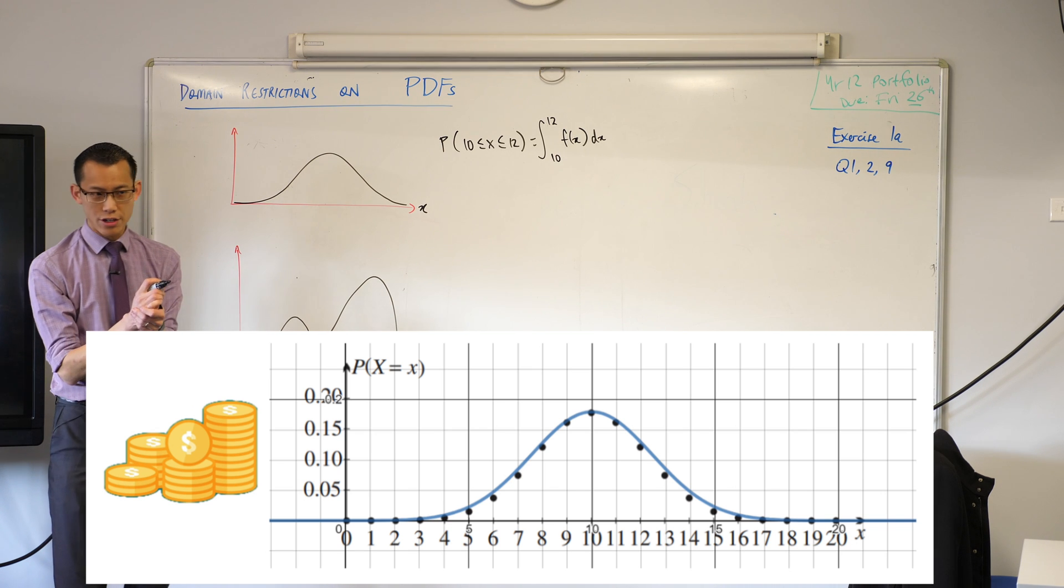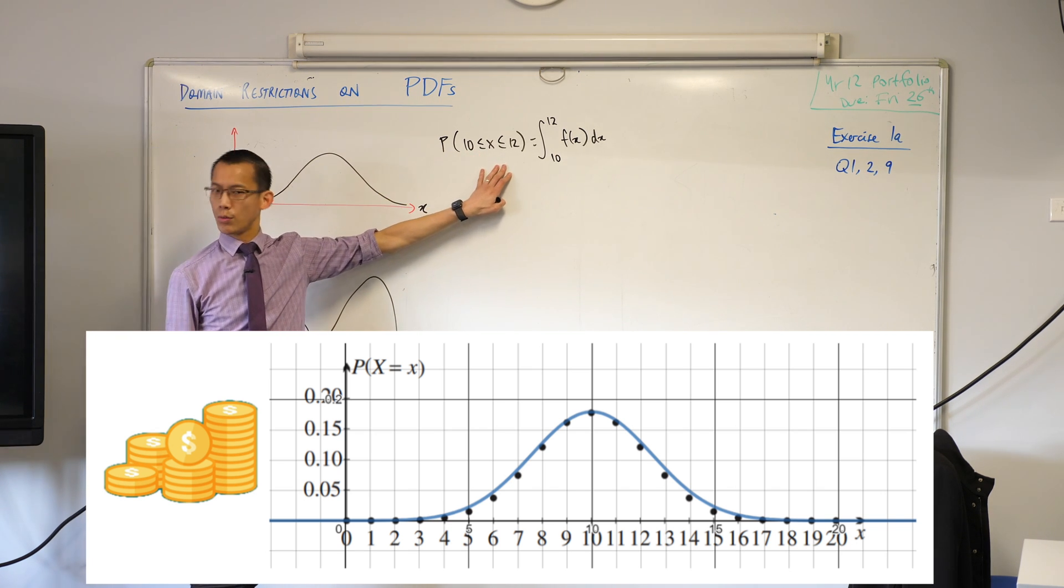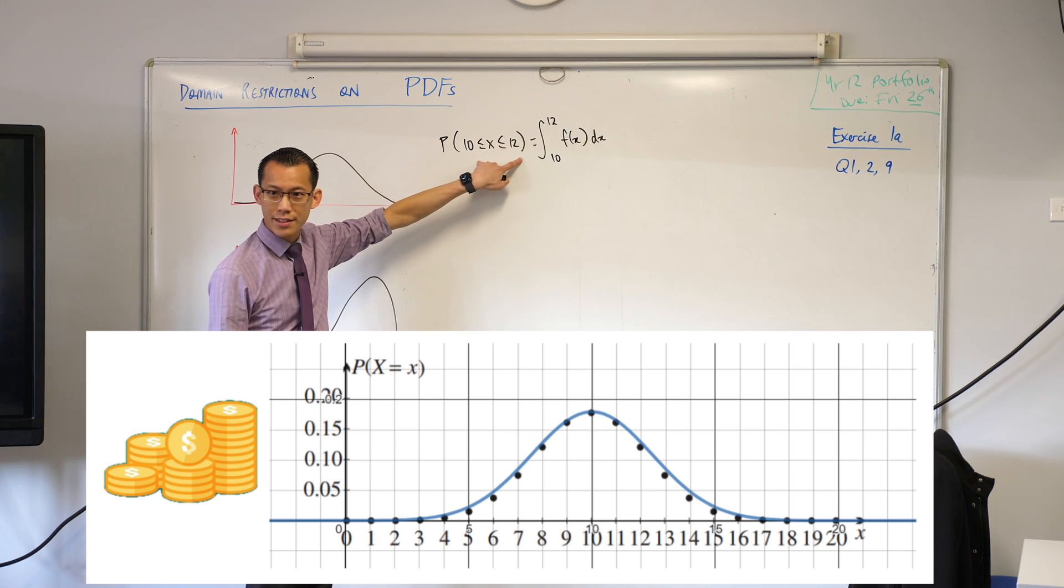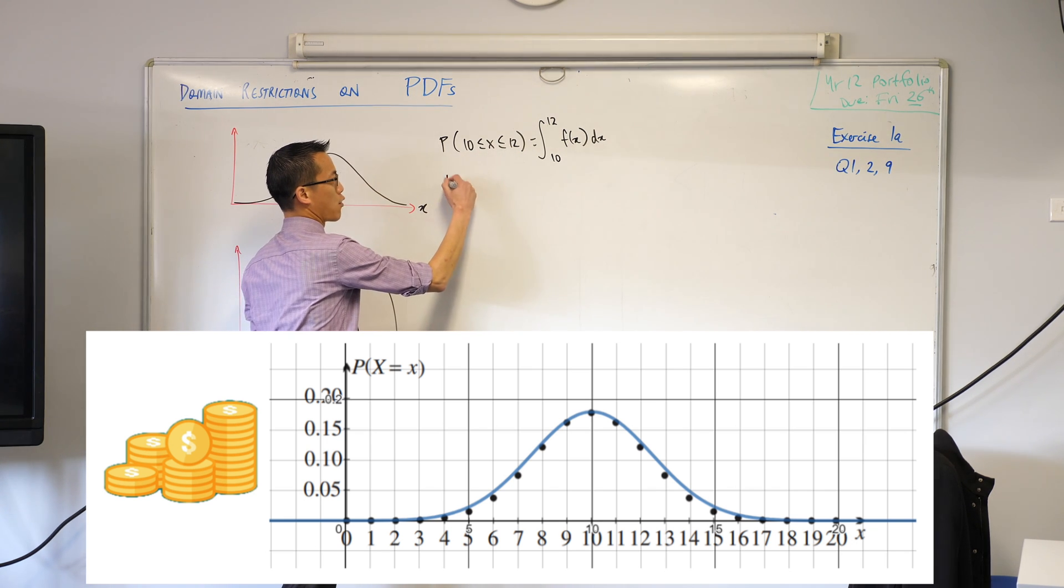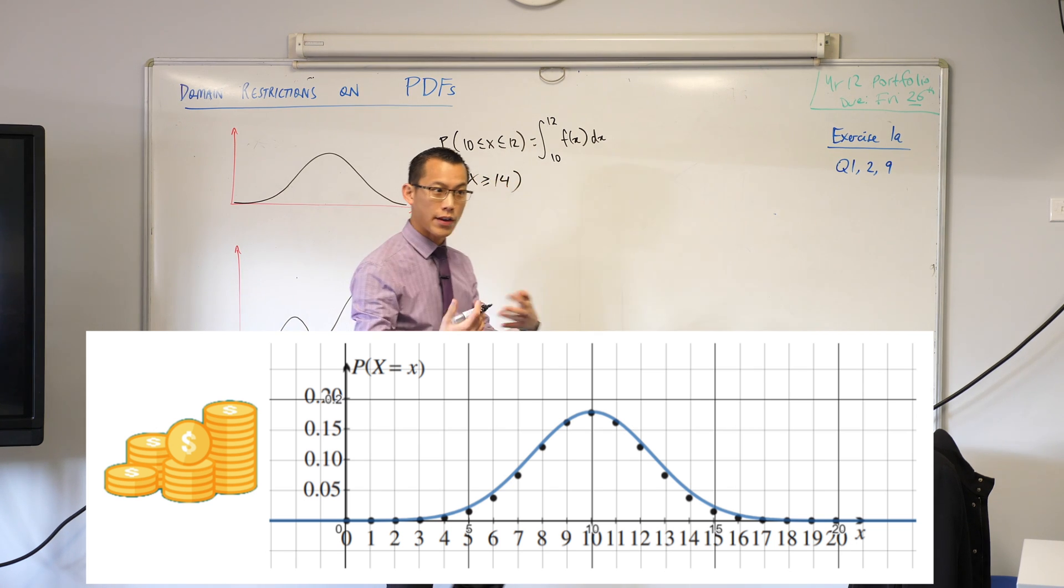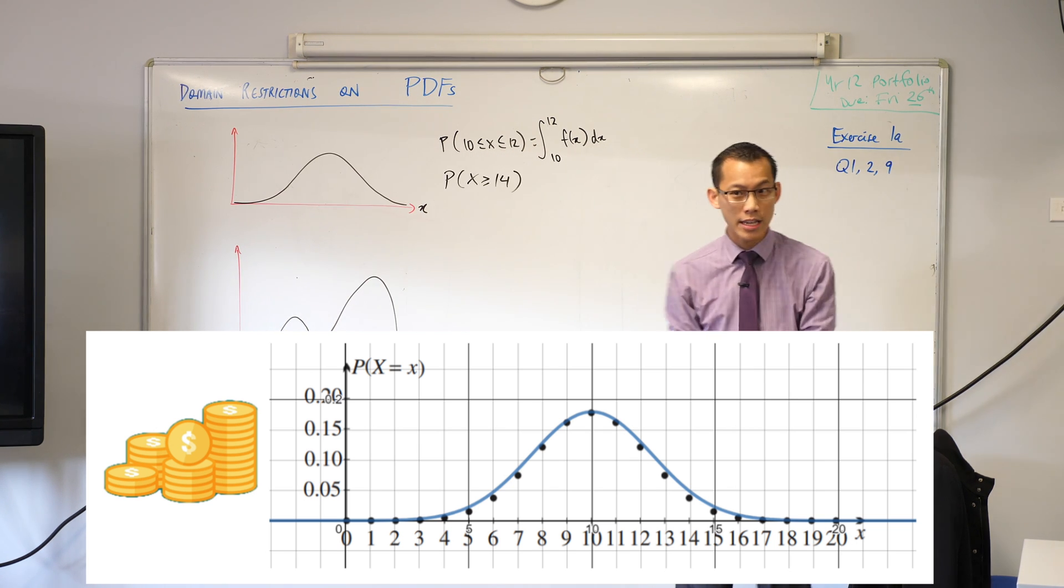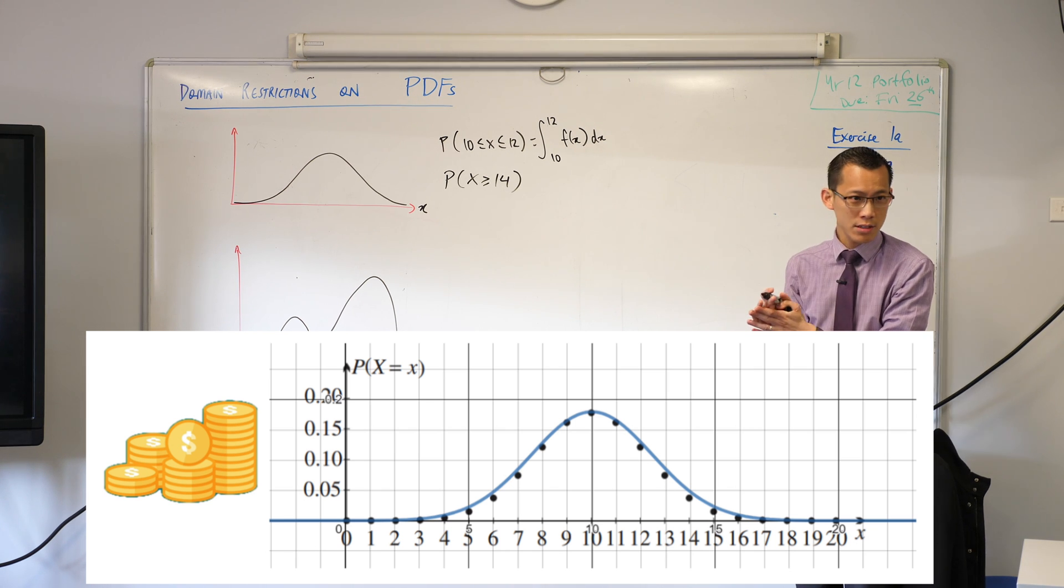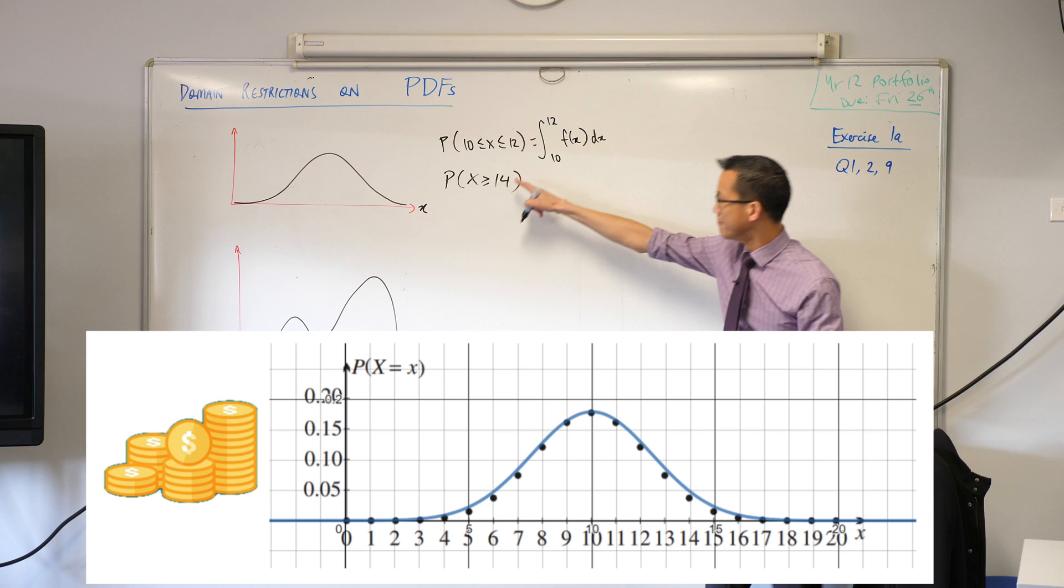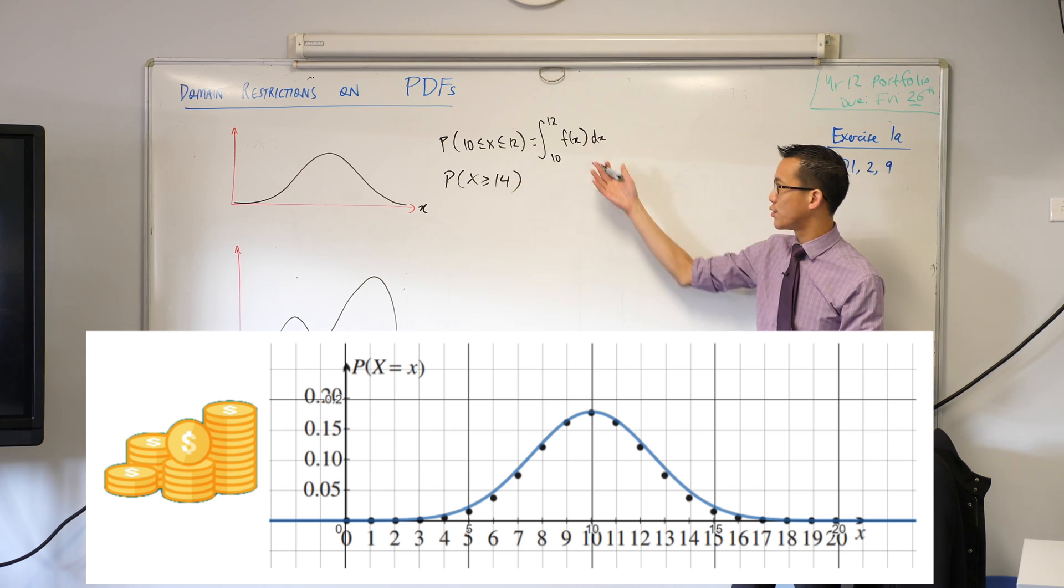One thing we didn't really address, though, is that often we don't state or we don't ask for probabilities where you've got two neat boundaries. I could just as easily ask for a probability like this: What's the probability that the number of heads face up is greater than or equal to 14? This would be a pretty normal thing to ask.